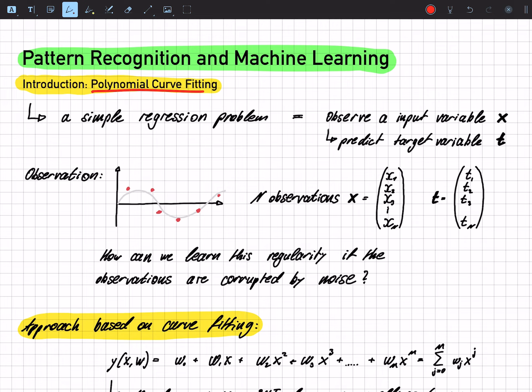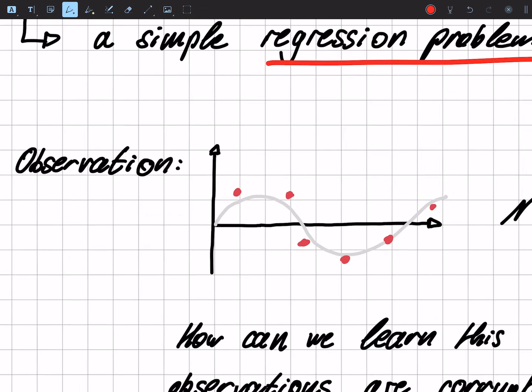We would like to solve a simple regression problem. What is a regression problem? We observe an input, that's our x, and we would like to predict the target variable t. So how does it might look like?